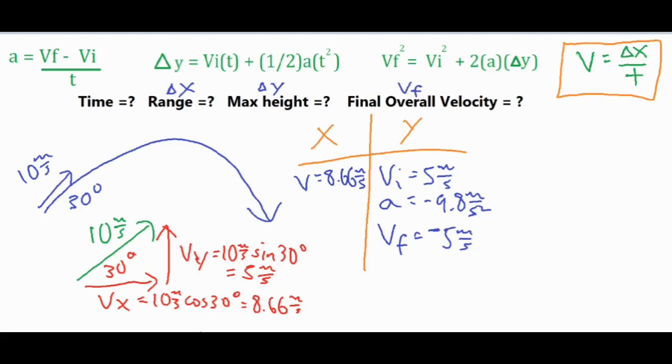Now we're ready to solve for our time. We're definitely going to use the right column because we only have one number to work with on the left. The formula we're going to use is the first one because we have three out of the four variables and t is our unknown. All I had to do was put in our acceleration: negative five minus five which is negative 10 on top, divided by negative 9.8, and I have a total time of 1.02 seconds.